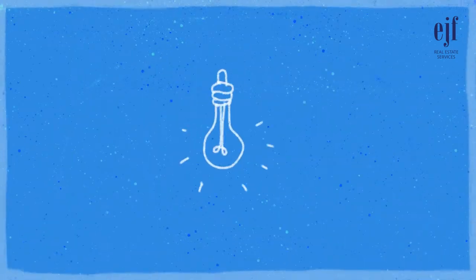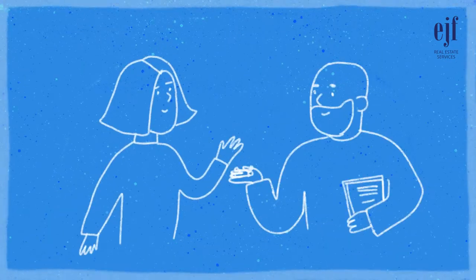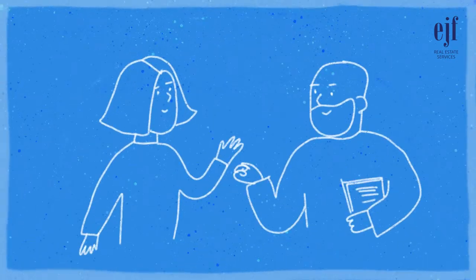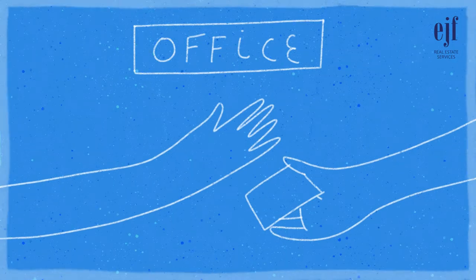Replace all burned-out light bulbs. Turn in all keys and entry cards, either to the move-out inspector or by dropping them off in person at our office.